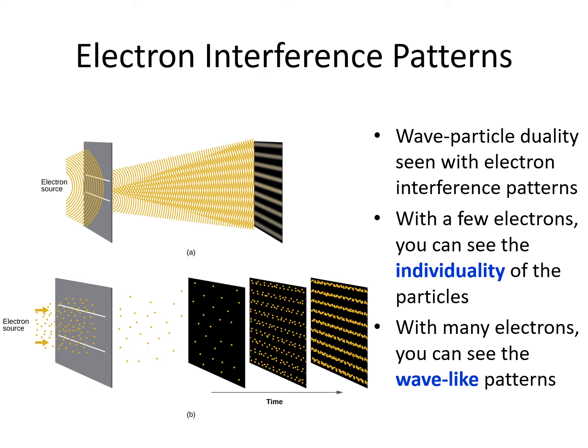Electrons can be passed through a diffraction grating and end up showing interference patterns on the detector, similar to how light shows interference patterns in the double slit experiment. When there are only a few electrons, you see the electrons as individual dots, representing their particle nature. When there are a lot of electrons, they make bands with wave-like patterns.